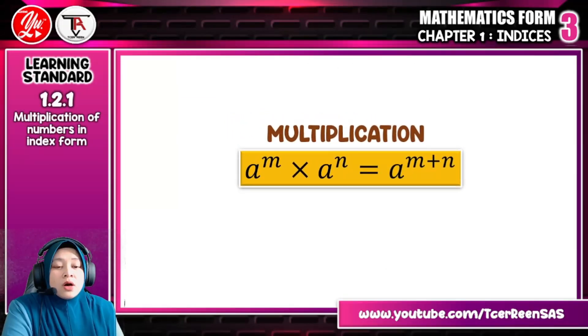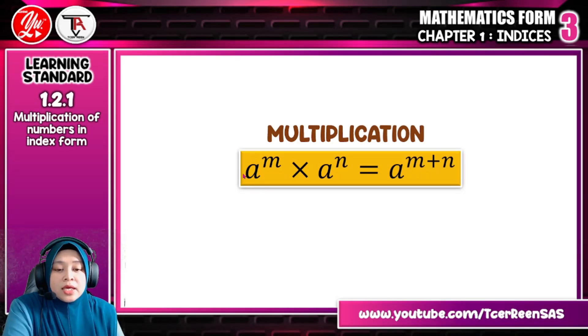Here is the law of multiplication of numbers in index form. The most important thing you need to know to use this law of indices is the base must be the same. For example, here, A multiplied with A. So you can use this law. If in the expression you have different base, you cannot use this law as the solution. Look at this law, a to the power of m times a to the power of n is equal to a to the power of m plus n.